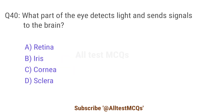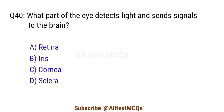Question 40. What part of the eye detects light and sends signals to the brain? The right answer is option A. Retina.